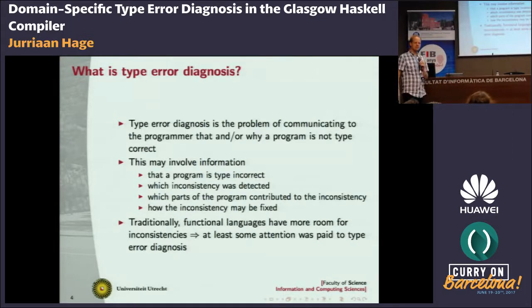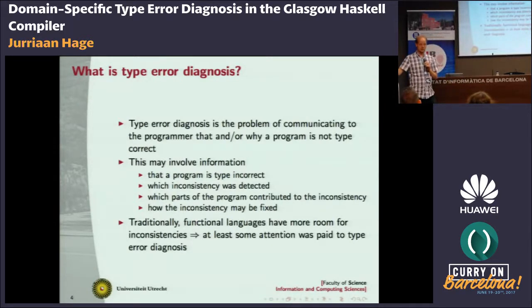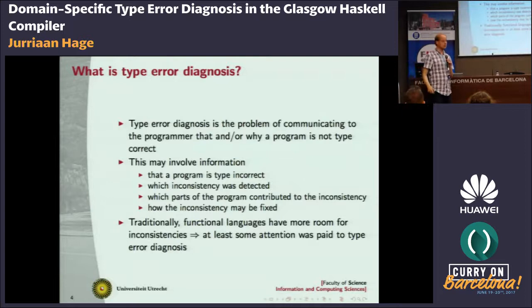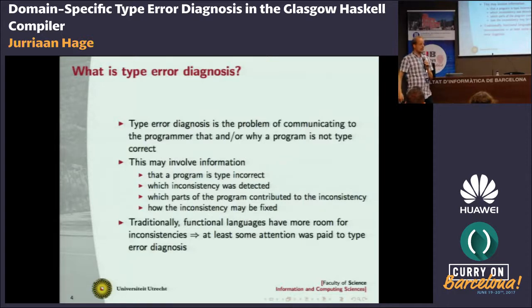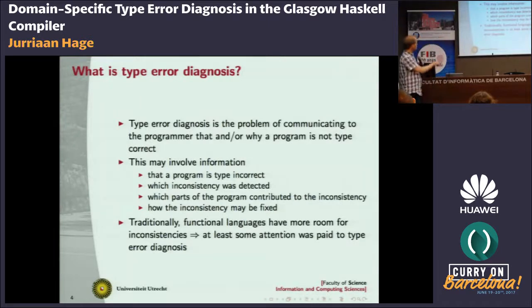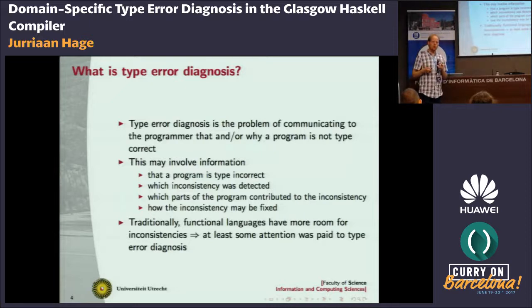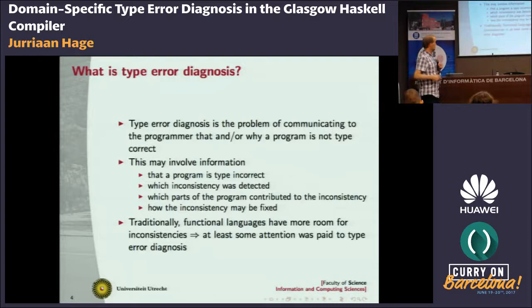If you look at the literature, there's very little about type error diagnosis for languages like Java — even for Java, which has an intrinsic type system. I think I wrote the only two or three papers about that. Nobody's interested, it seems. There's actually a PhD thesis on Scala, but almost no papers about Scala. In functional languages, because of higher-order functions and parametric polymorphism, there's much more room for mistakes, so decades ago people started doing work on this. Whatever I'm doing is part of that big body of literature.